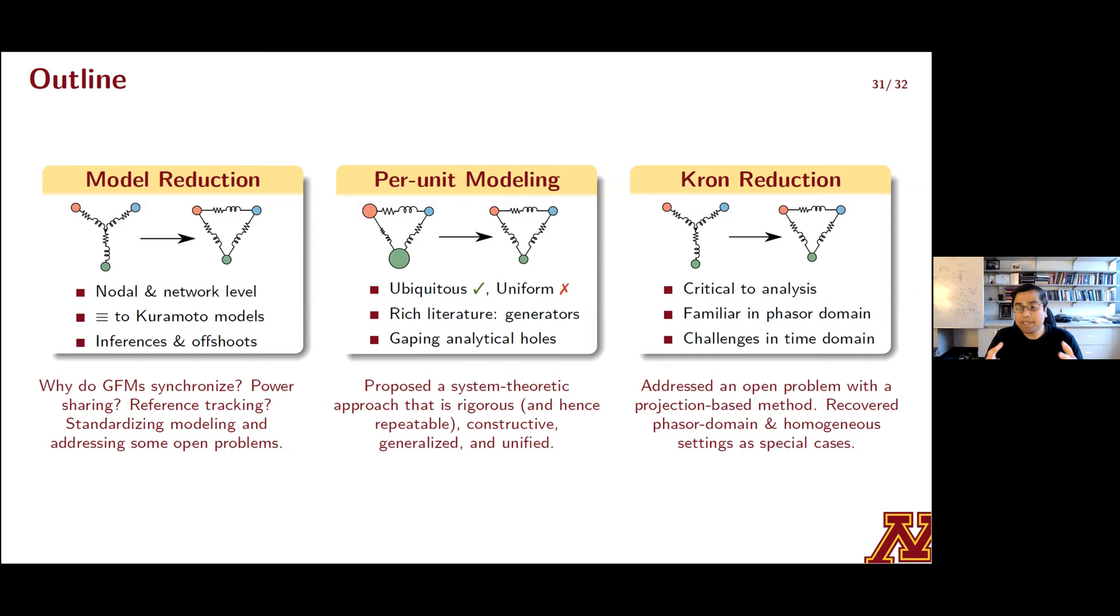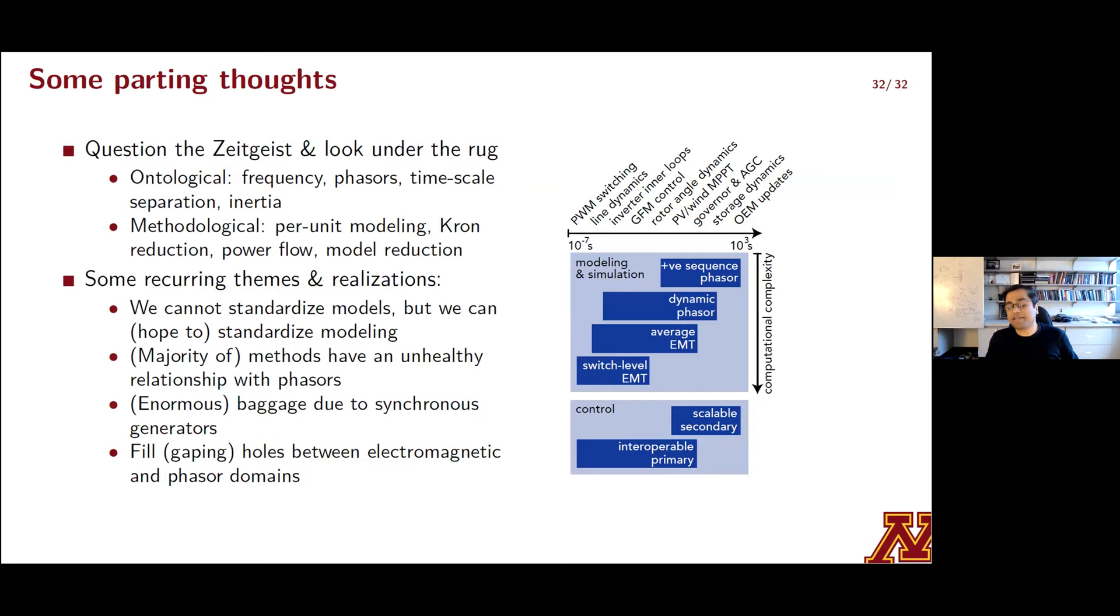So we are revisiting this outline one last time as I close out this talk with this discussion on time domain Krone reduction. What I did was I presented a projection-based method to fill a gap that in my opinion was left wide open in the case where lines don't always have the same R over L ratios. And in special cases, we recovered what's known in the literature. We anticipate this result helping us expand settings where Krone reduction is applied, especially for analysis. We saw one instance of this when we derived the Kuramoto model for the IBR dynamics. So I'm going to conclude by offering some parting thoughts. And I'm going to do this by laying it out alongside the timescales of operation, different modeling paradigms, and timescales at which we anticipate actuating control as part of what we will do through Unify.